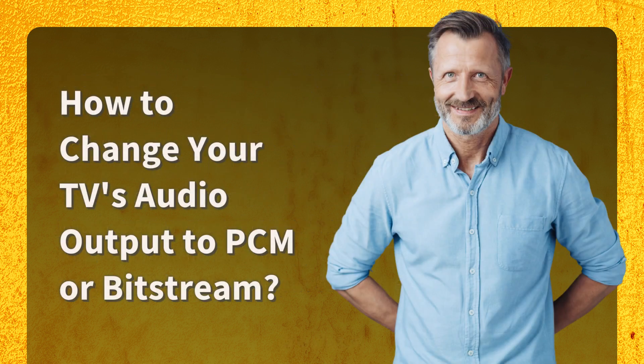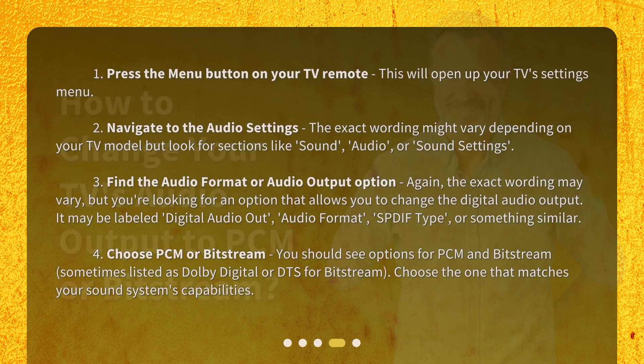How to change your TV's audio output to PCM or Bitstream? Step 1: Press the menu button on your TV remote. This will open up your TV's settings menu. Step 2: Navigate to the audio settings. The exact wording might vary depending on your TV model, but look for sections like Sound, Audio, or Sound Settings.